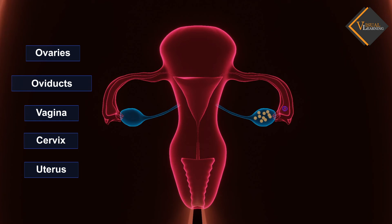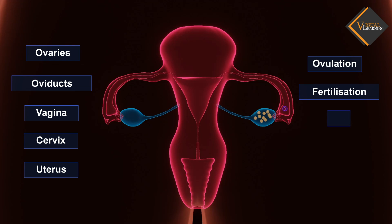These parts, along with a pair of mammary glands that are integrated both functionally and structurally, also support the process of ovulation, fertilization, birth, and finally child care.